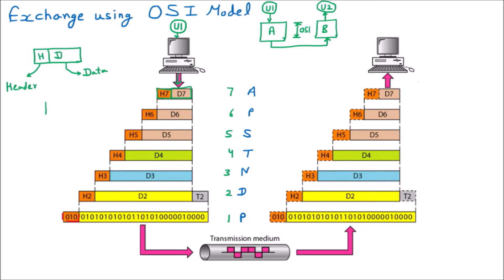You cover that postcard in an envelope and write the sender and receiver address on it. So H7 represents the application layer header - the address on the envelope. This combination of header and data is now becoming D6, the data for the presentation layer.